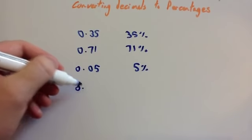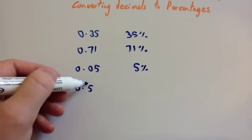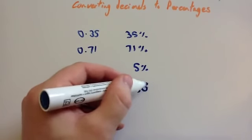And finally, if you've got one like 0.5, well, this time if you want to move the decimal place twice, you've got to move it once and again, so then that would be 50%.